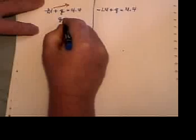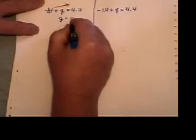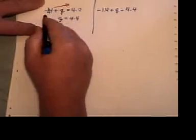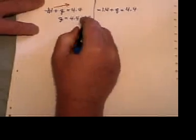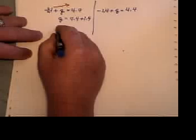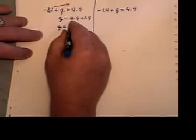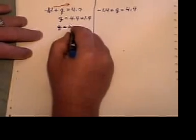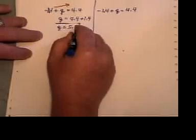So you have Q by itself here, 4.4 there, and the minus 1.4 becomes a plus 1.4 when it crosses the border. Now you just do your addition, 4.4 plus 1.4 is 5.8, and that's your answer.